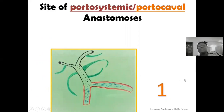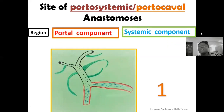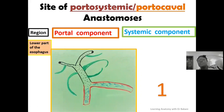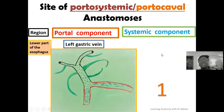The first region where we have the establishment of portal systemic anastomosis is at the lower part of the oesophagus. This anastomosis will have a portal component and also a systemic component. The portal component is formed by the left gastric vein. Remember that the left gastric vein receives oesophageal branches, and it is these oesophageal branches that will be directed towards the lower end of the oesophagus.